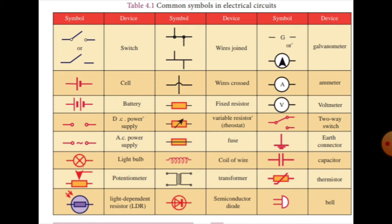A fuse is connected in series with the resistor. Other components include: coil of wire, transformer, semiconductor, galvanometer, ammeter, voltmeter, two-way switch, earth connector, capacitor, and thermistor.